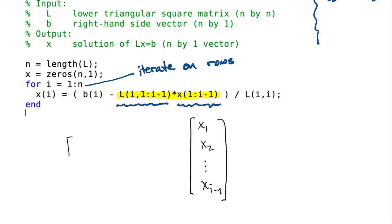Now the L part, that's also extracting a sub-vector. In this case, it's from the matrix L in row i, columns 1 through i-1. So that has the shape of a row.